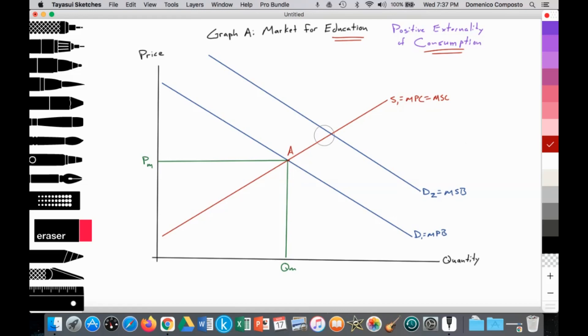So in the free market, we can state that at free market quantity of QM, we notice that the marginal social benefit of education, of the consumption of education, is greater than the marginal social cost. Thus, there is an under-allocation. Society would like more resources provided to the production and consumption of education.